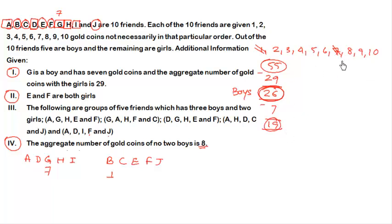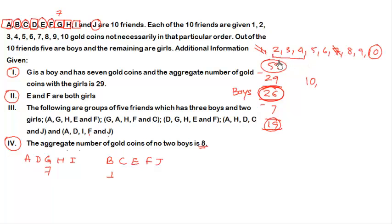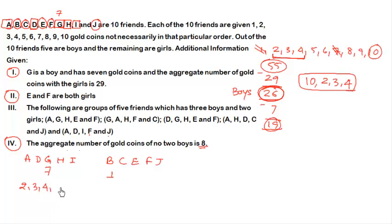Taking the largest number as 10: if one boy has 10 coins, the other three must sum to 9. The smallest possible three numbers are 2, 3 and 4, which sum to 9. So the first valid combination for boys is {2, 3, 4, 7, 10}, and the girls would then carry {1, 5, 6, 8, 9}.